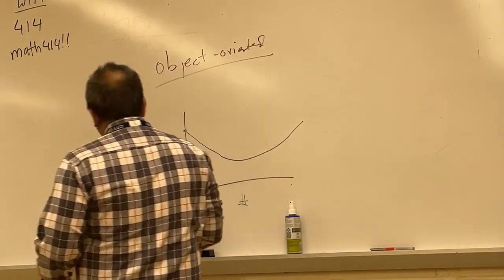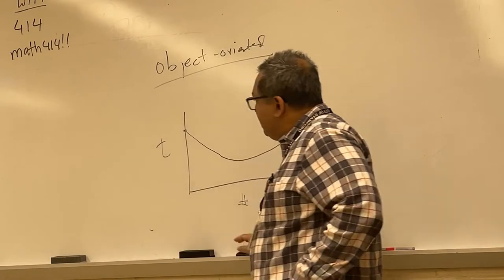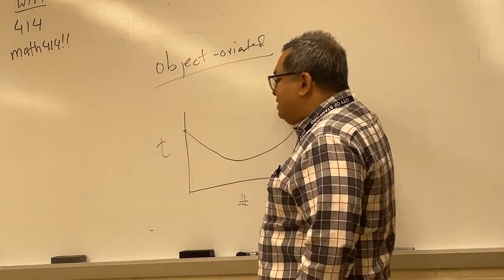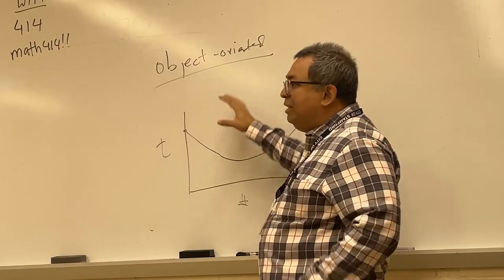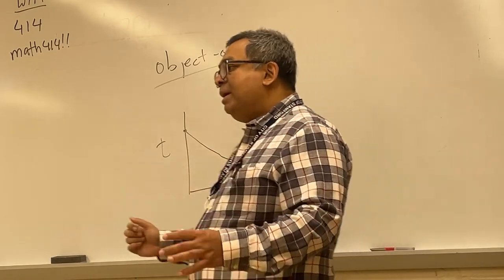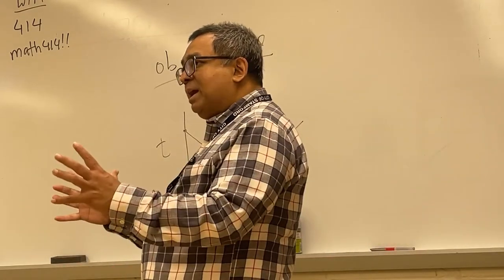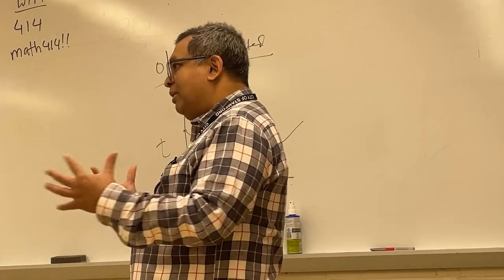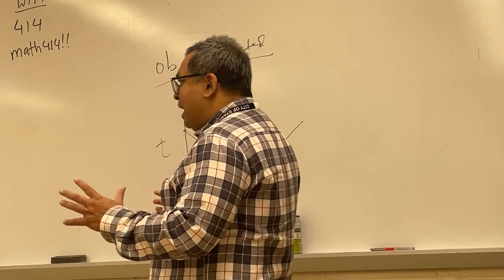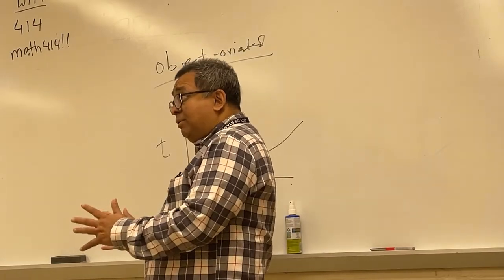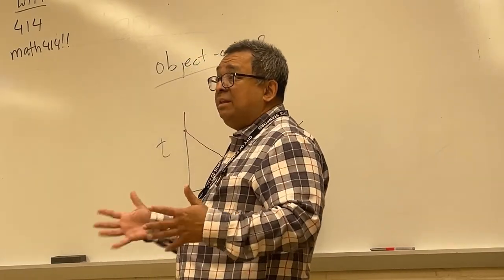The idea behind an object-oriented model is that instead of looking at a program as a series of steps that need to be accomplished, we can instead think of the program as a bunch of objects that interact with one another. Try to think of an object as having some data associated with it and some methods - the things that the object can do.